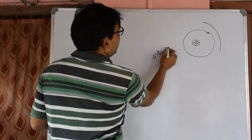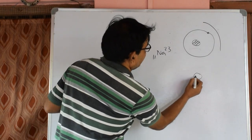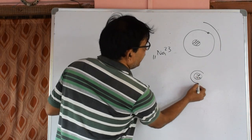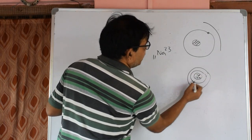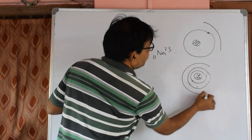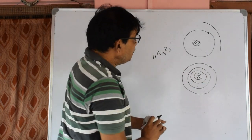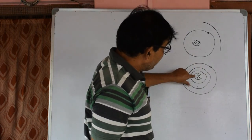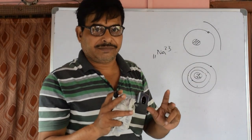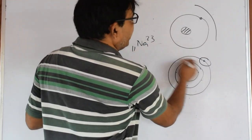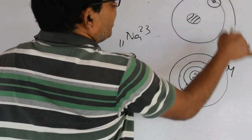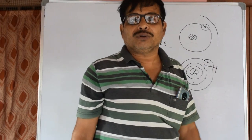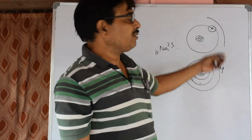Even if I have an electron — 1 proton, 2 neutrons — this is the same setup. So we have a hydrogen Bohr model applied to these atoms.